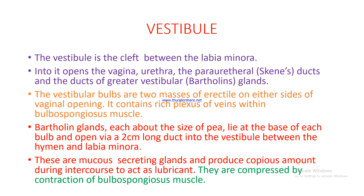The vestibule is the cleft between the labia minora. Into it open the vagina, urethra, paraurethral (Skene's) ducts, and the ducts of the lesser vestibular glands. The vestibular bulbs are two masses of erectile tissue on either side of the vaginal opening, containing a rich venous plexus within the bulbospongiosus muscles. Bartholin's glands, each about the size of a pea, lie at the base of each bulb and open via a 2 cm duct into the vestibule between the hymen and labia minora. They are mucus-secreting glands producing copious secretion during intercourse to act as lubricant, and are compressed by contraction of the bulbospongiosus muscle.